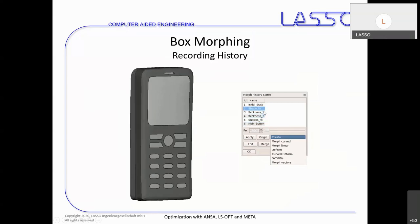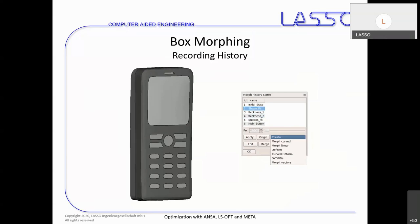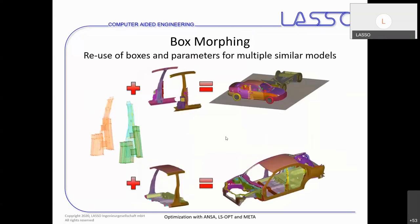The big advantage of using morphing boxes is that you can reapply them quite easily on multiple similar models. Just store them with all their parameters in a separate ANSA database and merge them into another model — maybe for another discipline or a similar size model — and reuse them without having to create them from scratch again.